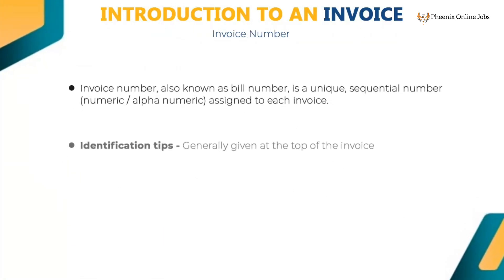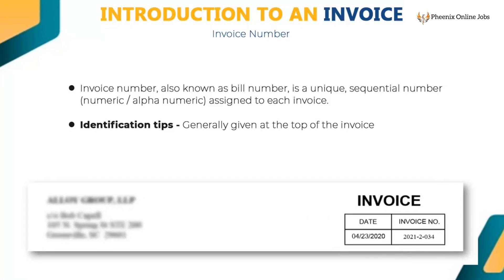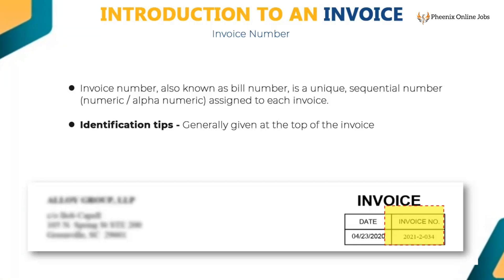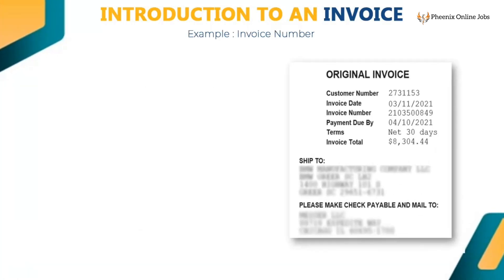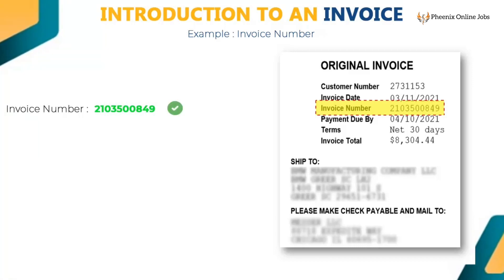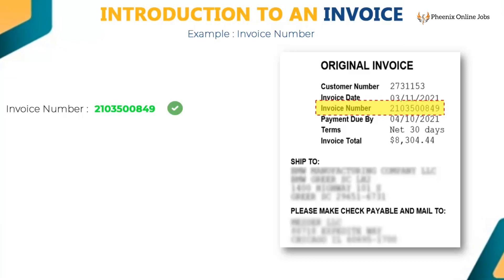Invoice number, also known as bill number, is a unique sequential numeric or alphanumeric number assigned to each invoice. It is generally given at the top of the invoice. In this invoice, capture invoice number as 2103500849 — key only the numeric value. Do not key the word 'invoice number.' If the word invoice number is already populated, then remove it.